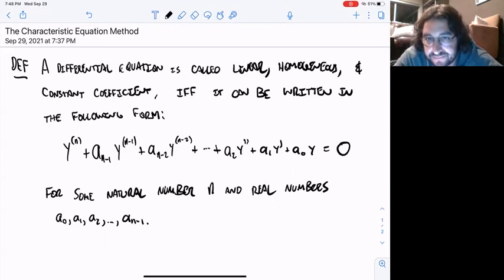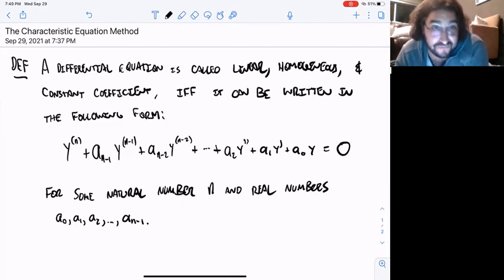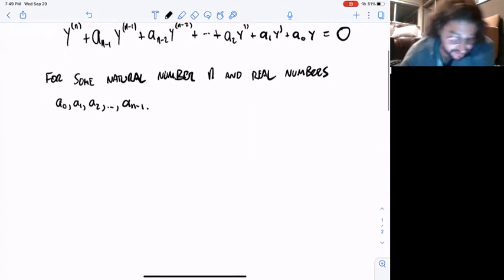Basically, you have to have sums of derivatives of y, maybe zero derivatives up to some number of derivatives, multiplied by constants set equal to zero. That's the only kind of differential equation that this method applies to, so it's very specific, but there are a ton of really important differential equations of this form, so it comes up a lot. Let me show how it works.